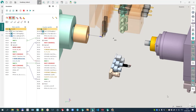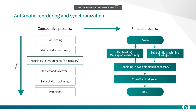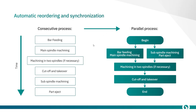So we designed a consecutive process and got the parallel process automatically. Automatic reordering of operations and synchronization means we design a consecutive process and can then simulate both a consecutive and a parallel process. In the consecutive process: bar feeding, main spindle machining, optionally machining in two spindles, cut-off and takeover, then subspindle machining and part ejection. SprutCAM X performs this conversion automatically — this is one of the main advantages of SprutCAM X.